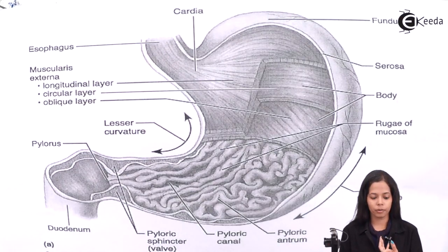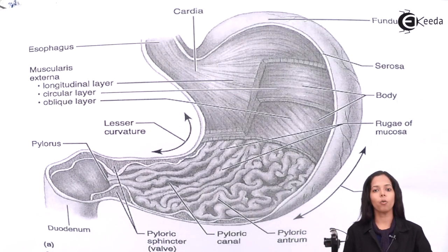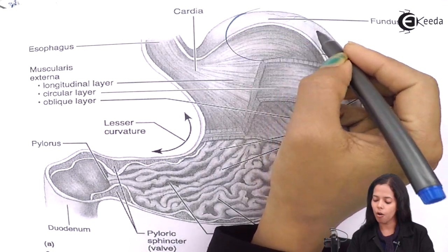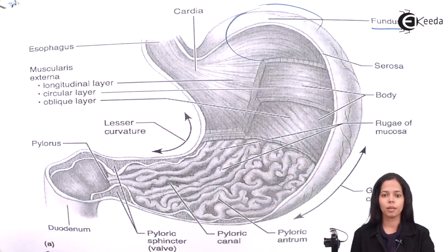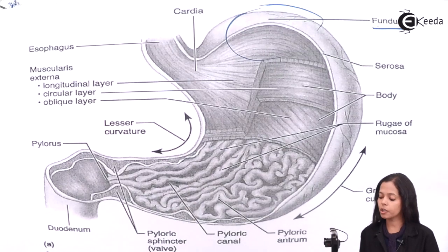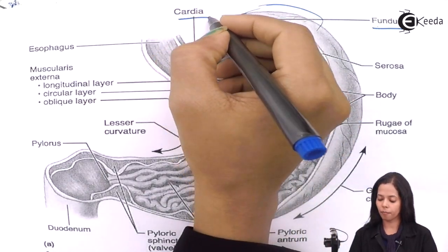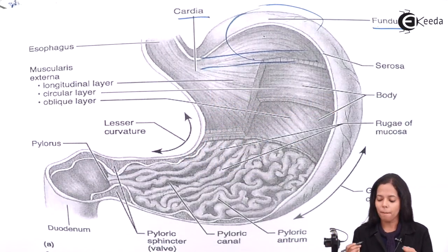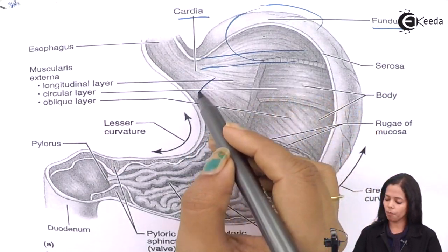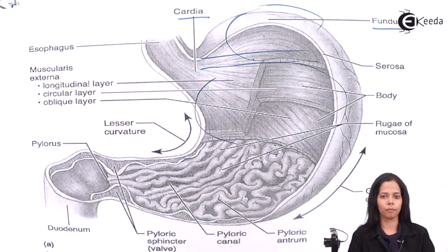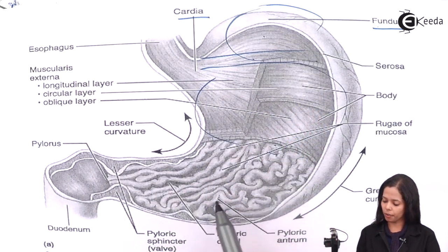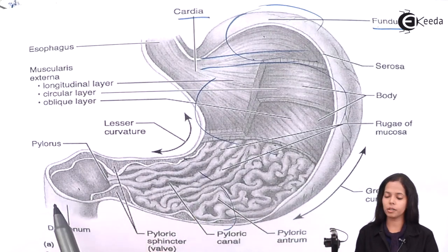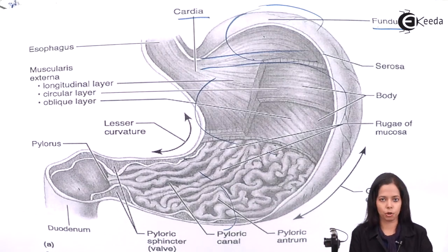In this diagram, let's find out where these four parts are seen. This upper bulging part is the fundus. Just below the fundus, the region is called cardia. Below cardia we have the major part called the body. And the part from here onward is the pylorus or pyloric region.